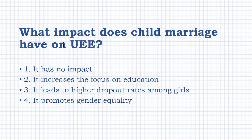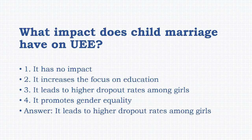What impact does child marriage have on UEE? Options: it has no impact, it increases focus on education, it leads to higher dropout rates among girls, it promotes gender equality. The answer is: it leads to higher dropout rates among girls.